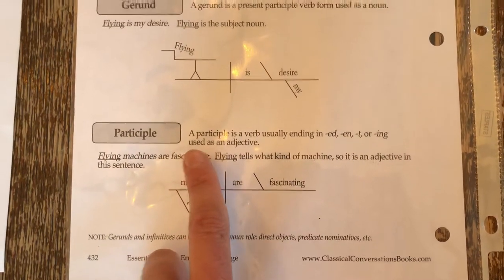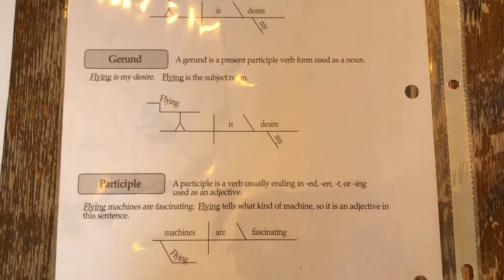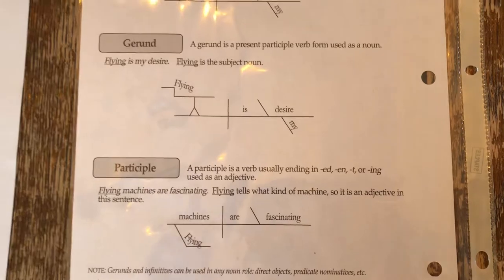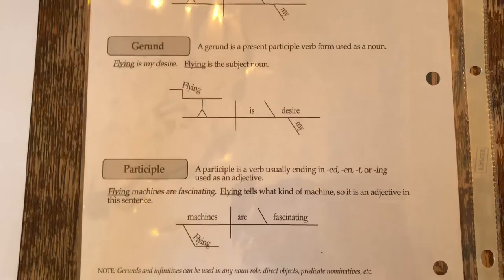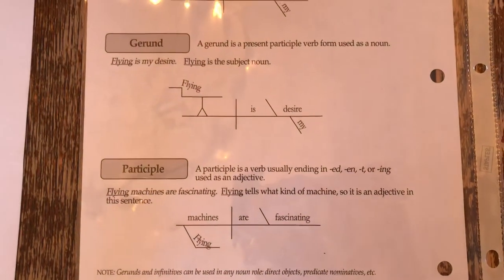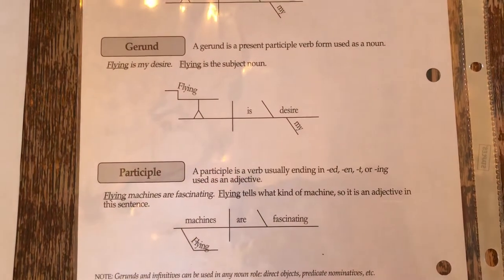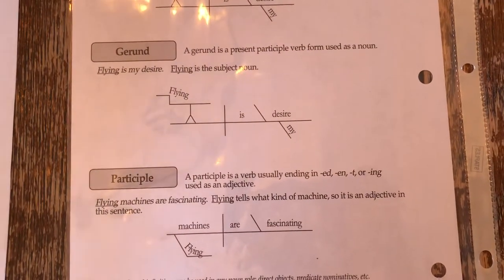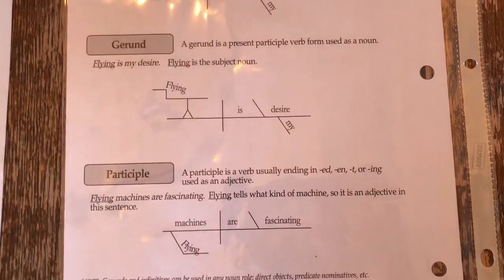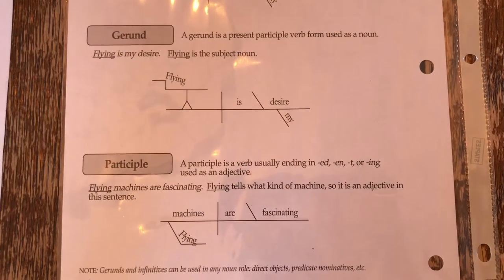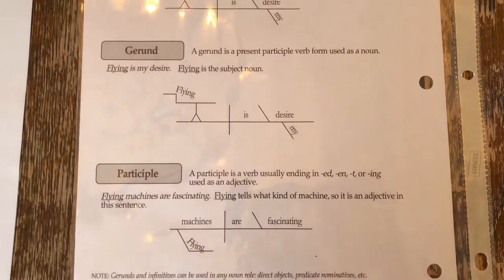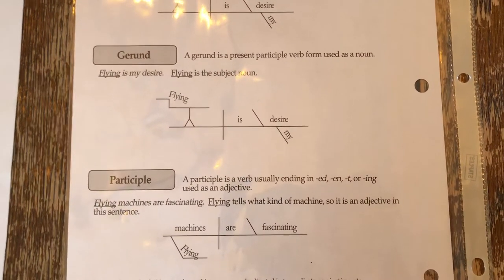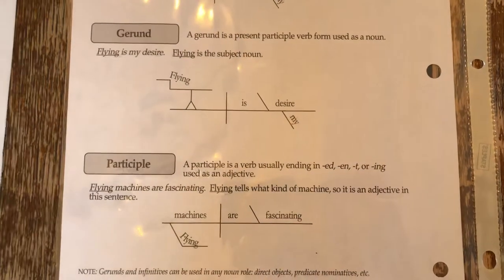That's our participle. Now a gerund is that present participle being used as a noun. So flying is an activity. An activity is a noun because a noun names a person, place, or thing, activity, or idea. So flying is an activity — it is a present participle being used as a noun. Therefore, it is a gerund.